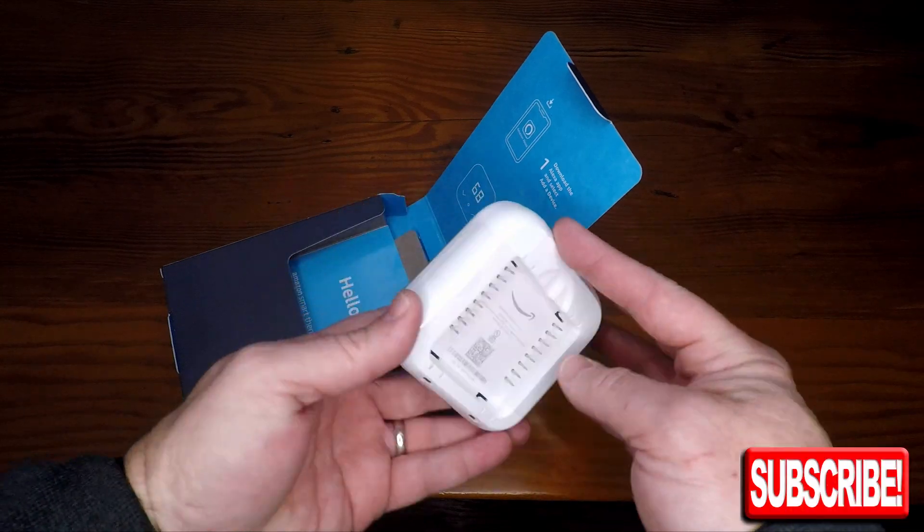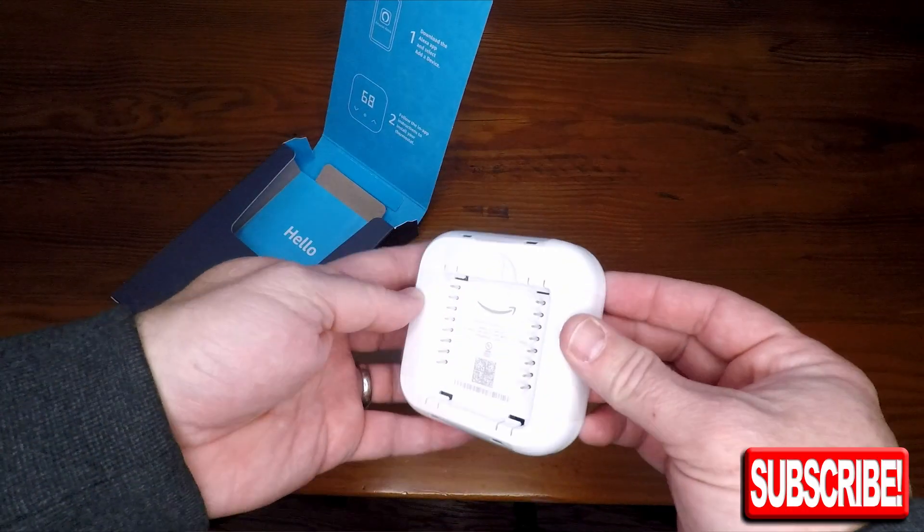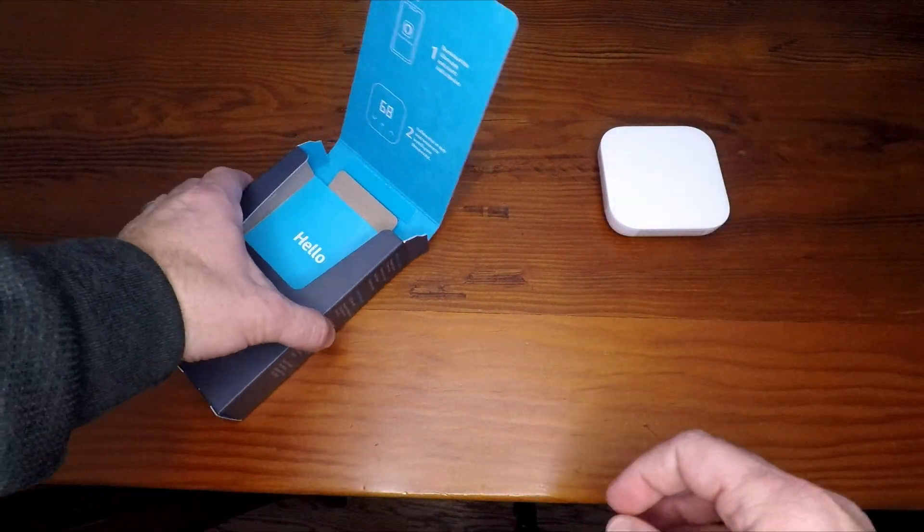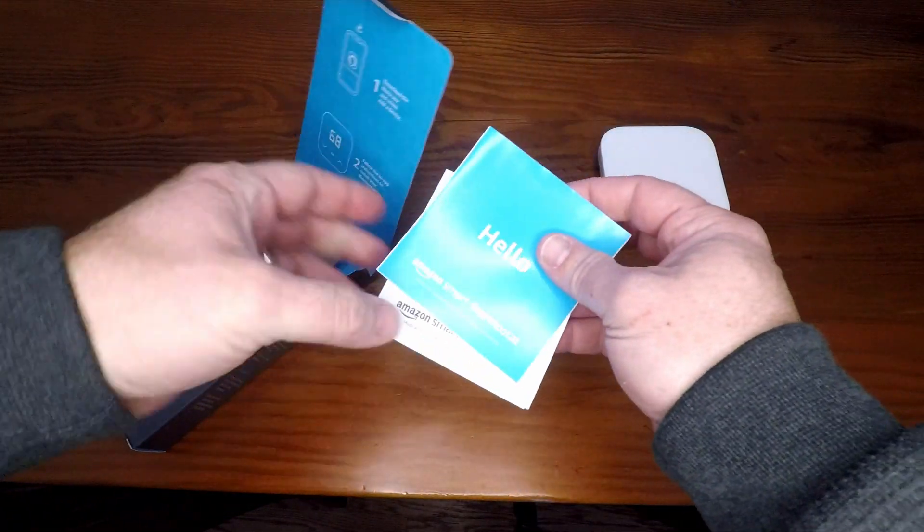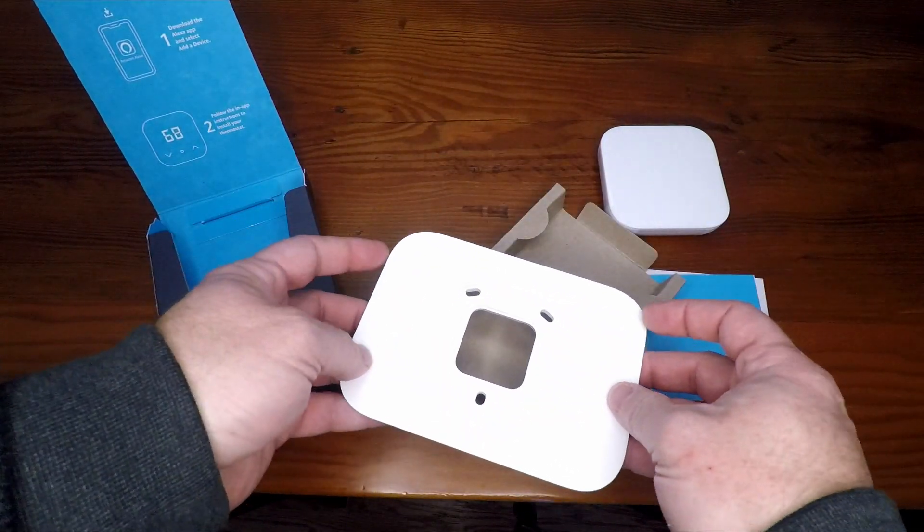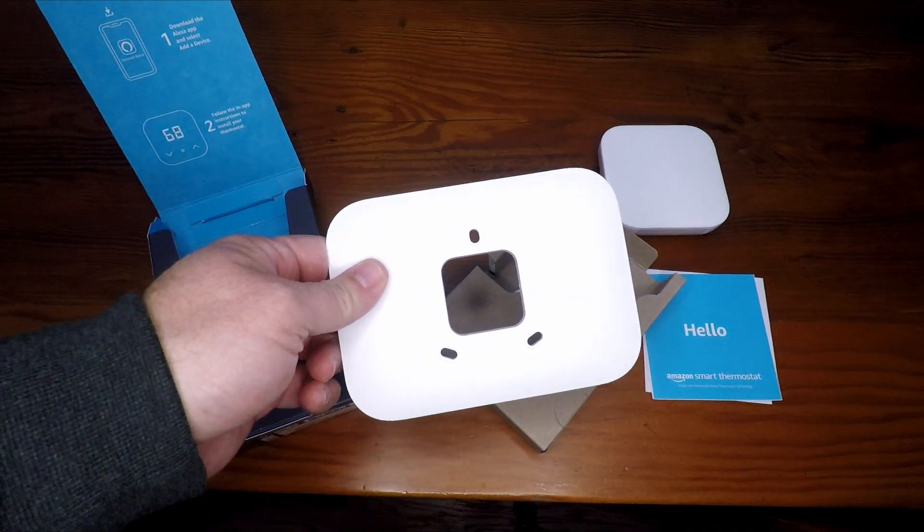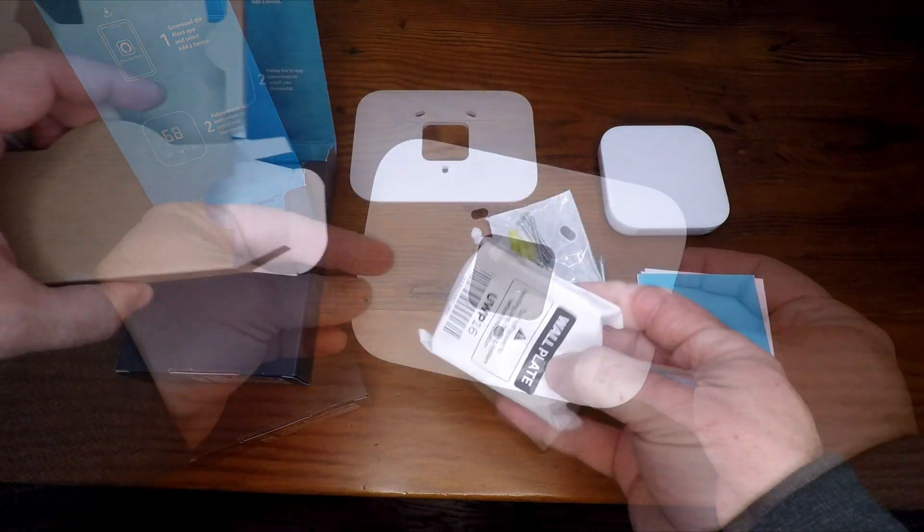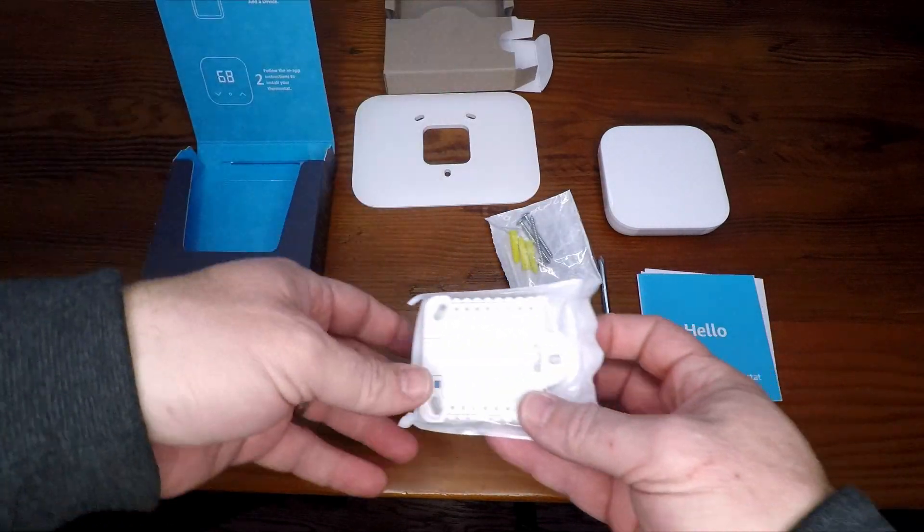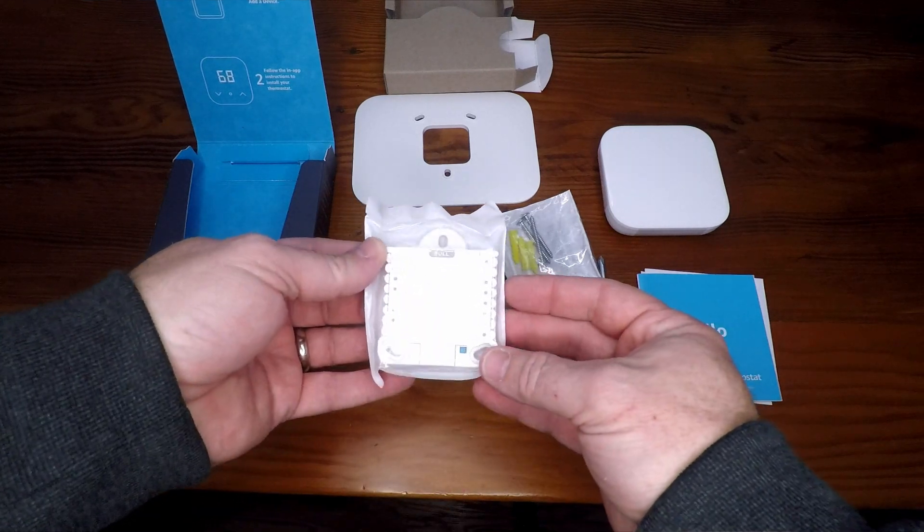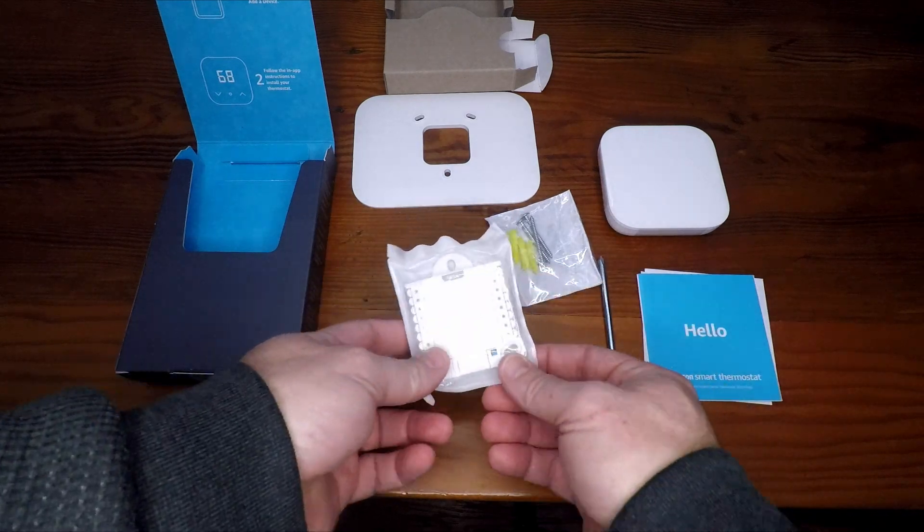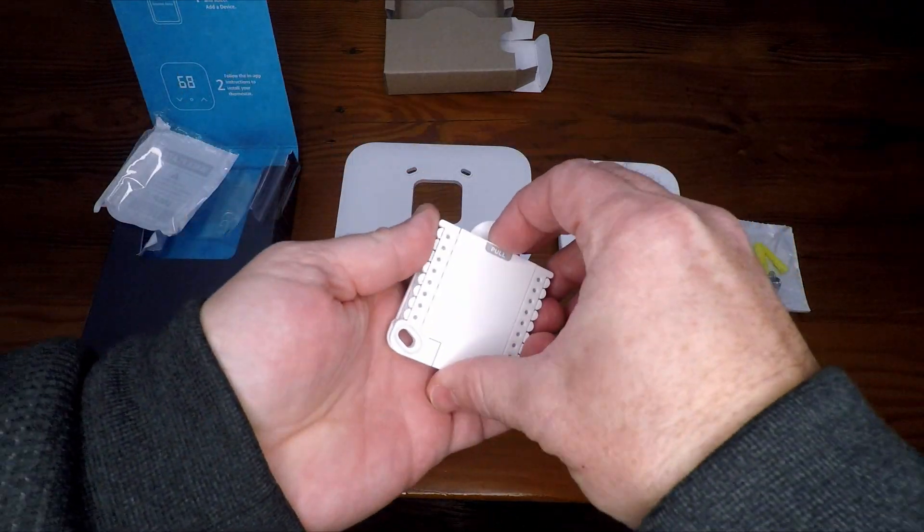Alright, what's in the box? We have the thermostat obviously, it seems pretty solid. We have the instructions, there's a wall plate, and then we have the wiring adapter and of course the mounting screws. Everything seems pretty well built, feels good in the hand, heavy.